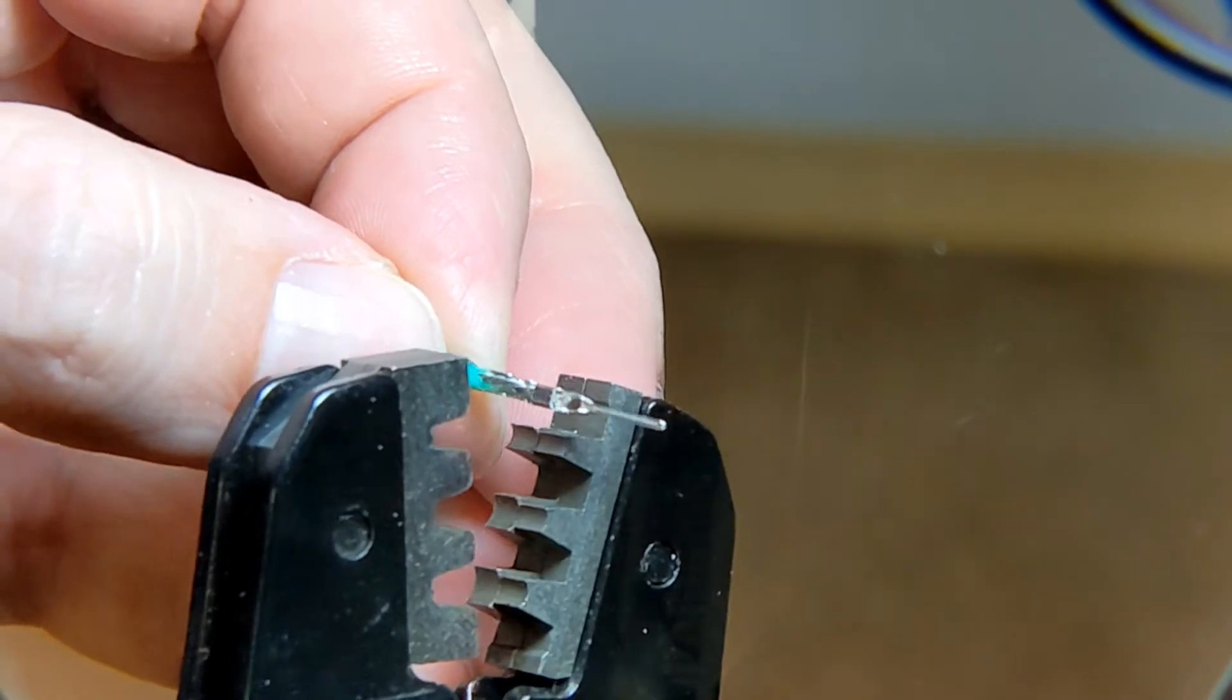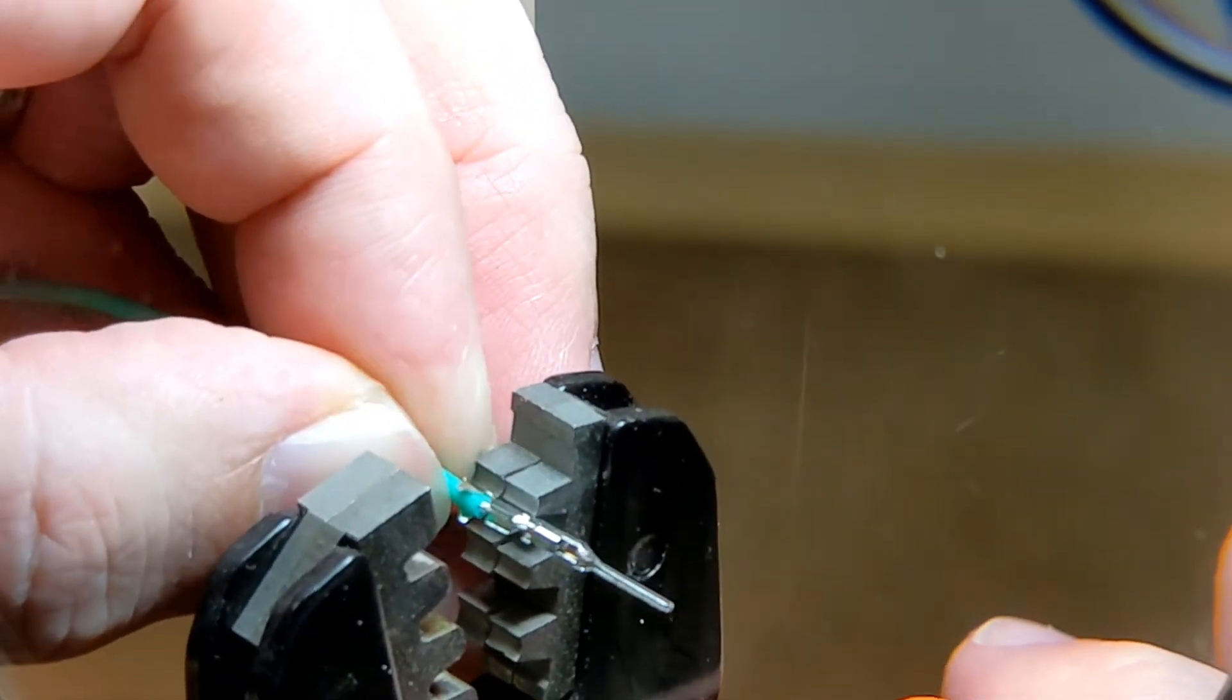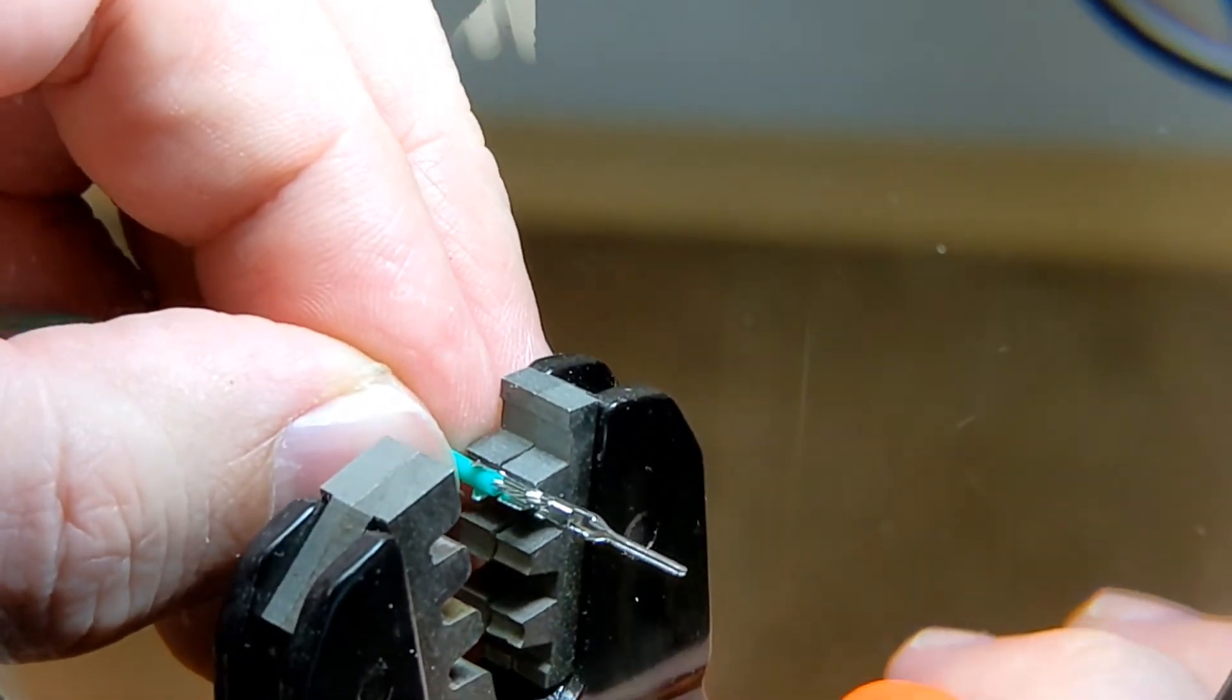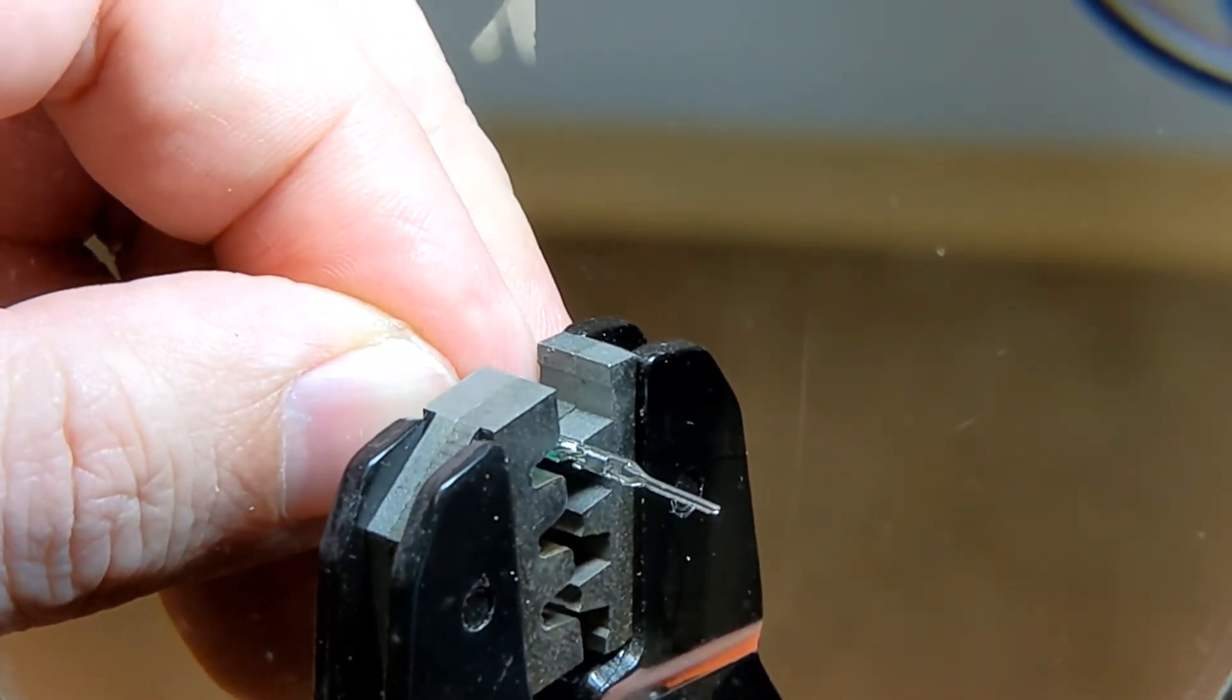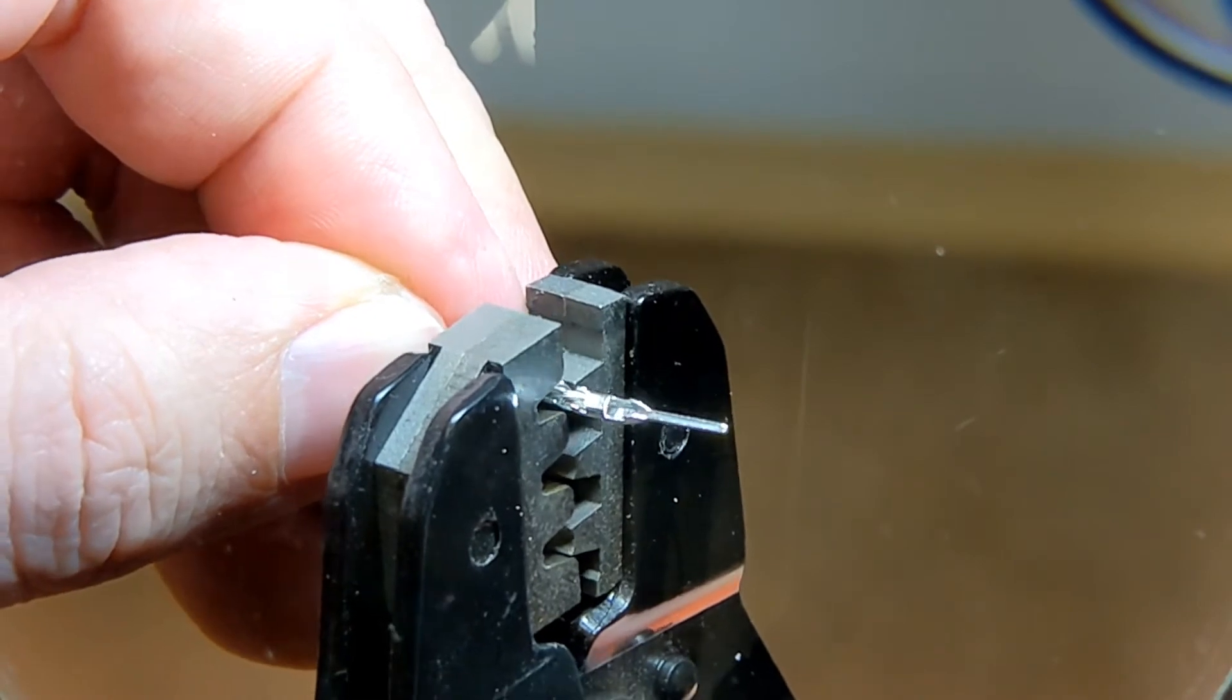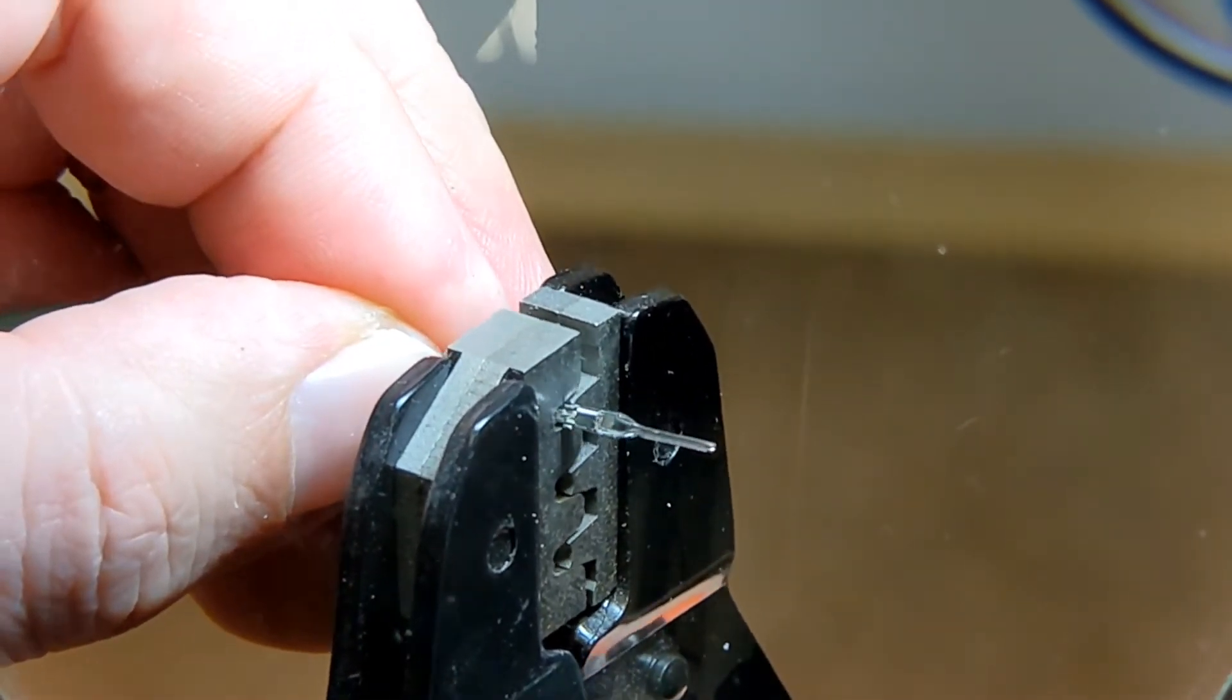And once that's in a good spot, go ahead and take the crimper, get this in the right spot, making sure to keep those front tabs clear of the crimper. There we go.